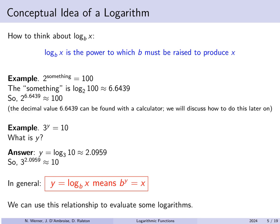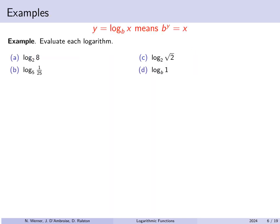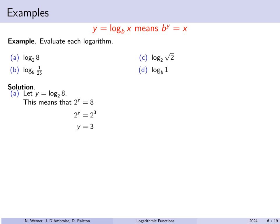Now let's evaluate some specific logarithms exactly. For part (a), log base 2 of 8: suppose y equals log base 2 of 8 and convert to an exponential expression. The base is 2, the exponent is y, and the output is 8, so 2 to the y equals 8. But 8 equals 2 cubed, so 2 to the y equals 2 to the third. Since exponential functions with base 2 are one-to-one, y must equal 3. So log base 2 of 8 is exactly equal to 3.